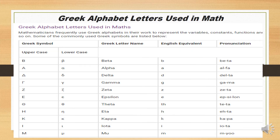Next we discuss Greek alphabet letters used in math symbols. Mathematicians frequently use Greek alphabet letters in their work to represent variables, constants, functions, and so on. Some commonly used Greek symbols are listed in uppercase and lowercase forms. For example: beta — lowercase b, pronunciation: beta.